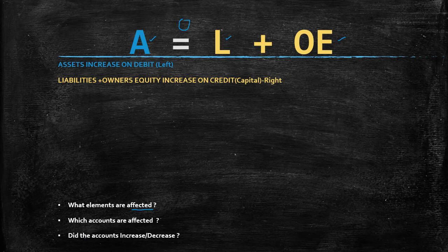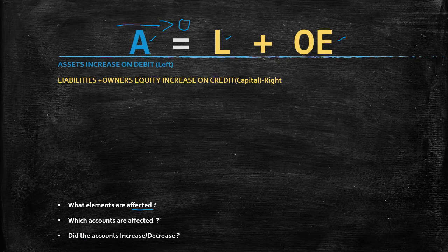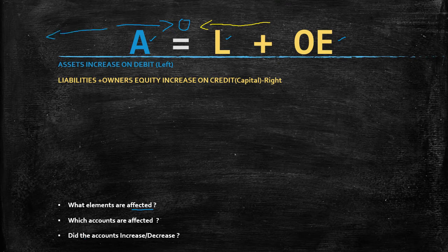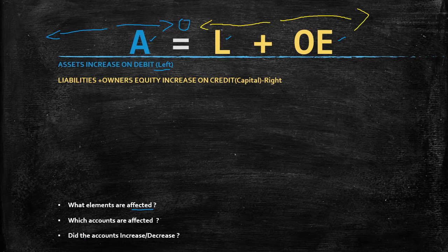Let's put a zero here. Every time the asset decreases, it moves towards the zero — it moves to the right. And every time our liability and owner's equity account decreases, it moves to the left towards the zero — just in opposite directions. When the assets increase, they move away from the zero, hence they move to the left hand side. When our liabilities and owner's equity increase, they move towards the right, or away from the zero.